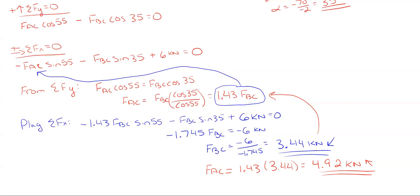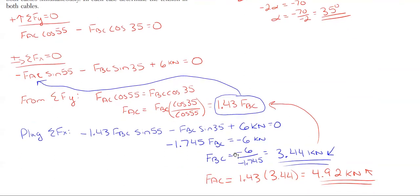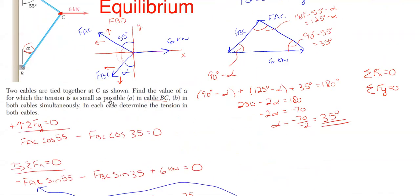Those are the answers for part A: the smallest force for F_BC occurs at alpha = 35°, giving F_BC = 3.44 kN and F_AC = 4.92 kN. The second part asks for the angle at which both cables have the same force.